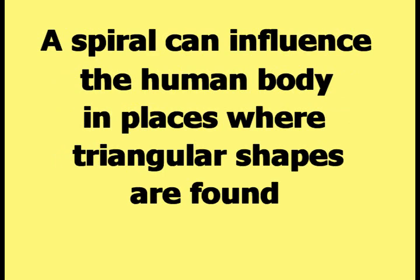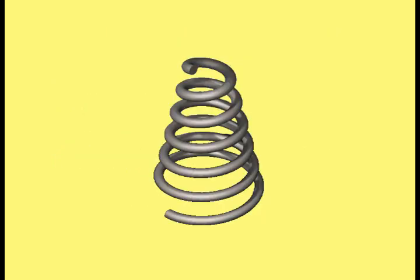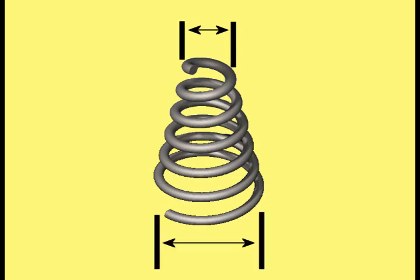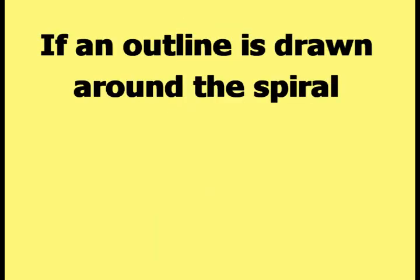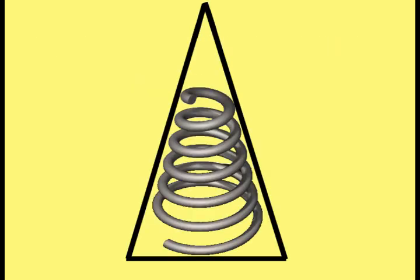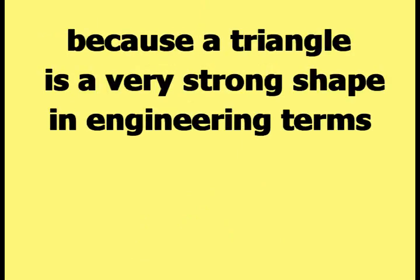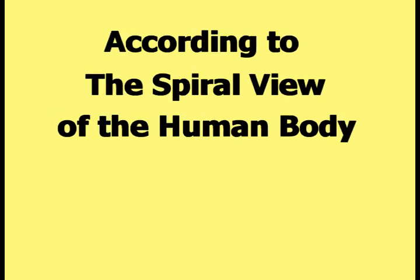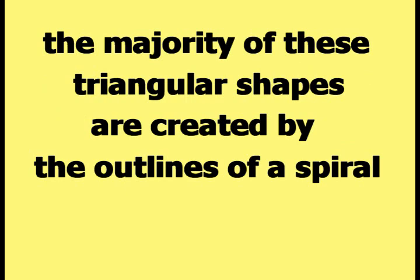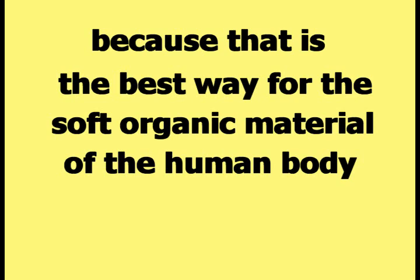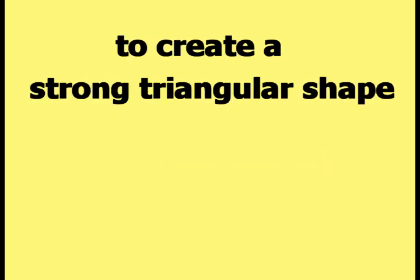A spiral can also influence the human body in places where triangular shapes are found. This picture shows a two-dimensional profile view of a changing diameter spiral with one smaller end and one larger end. If an outline is drawn around the spiral, the resulting shape is a triangle. The human body is filled with triangular shapes because a triangle is a very strong shape in engineering terms. According to the spiral view, most of these triangular shapes are created by the outlines of a spiral.